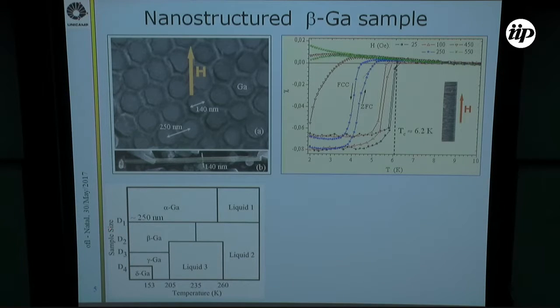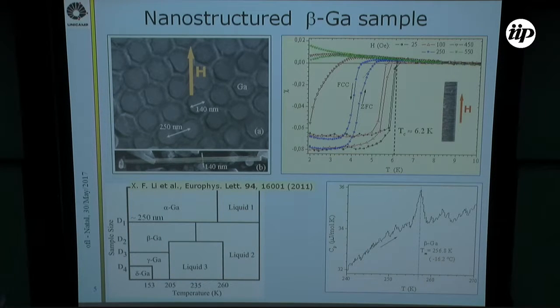This diagram shows that the geometrical confinement required for getting the beta-gallium phase requires that the sample size has to be below 250 nanometers. In our case, we are more or less in this region here. One perhaps most important evidence that we got really beta-gallium is this specific heat measurement that shows a peak due to the latent heat precisely at the expected melting point for beta-gallium.